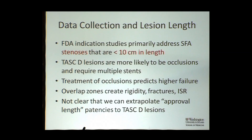When we look at data collection and lesion length, most of the room is aware that FDA approval studies focus primarily on stenosis and lesions 10 centimeters or less. TAS-D lesions are overwhelmingly more likely to be chronic total occlusions and require multiple stents for treatment. The treatment of occlusions predicts higher failure both in primary treatment and treatment of re-stenosis. Overlap zones create rigidity and stress risers, leading to fractures and higher risk of in-stent re-stenosis. It's not clear at all that we can extrapolate the approval length patency data out to TAS-D lesions — it's not a simple shifting of the line.